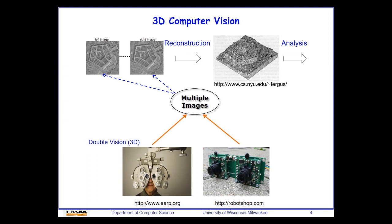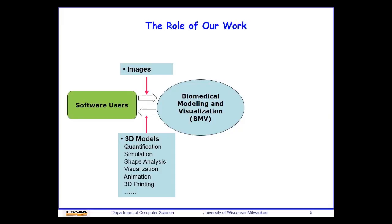In our group, we explore two problems. One is to reconstruct 3D models from multiple 2D images. Another is to analyze the 3D models reconstructed from 2D data. Our lab is the Biomedical Modeling and Visualization Lab. We take 2D images as input — either 2D raw data or 3D volume images reconstructed from 2D — and generate 3D models for quantification, simulation, and so on.